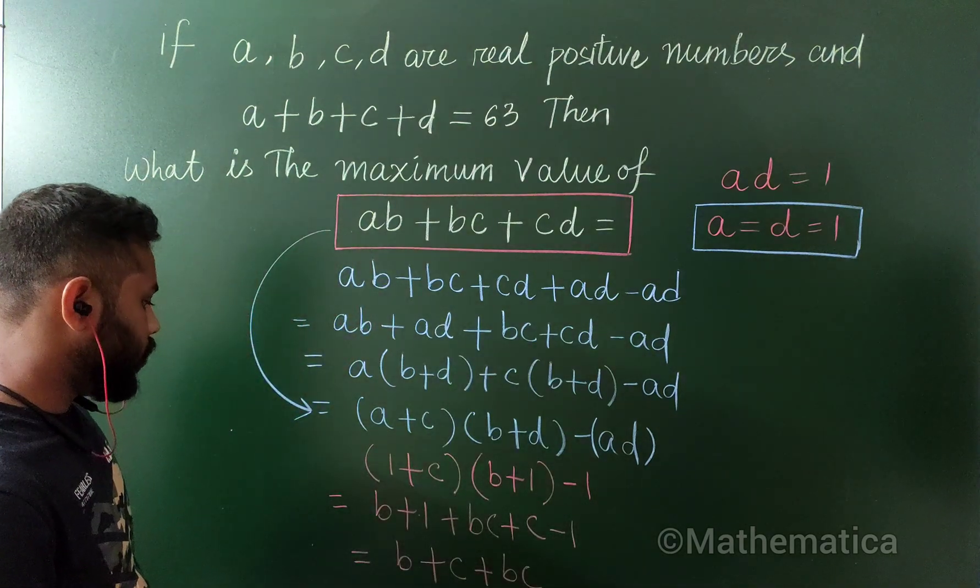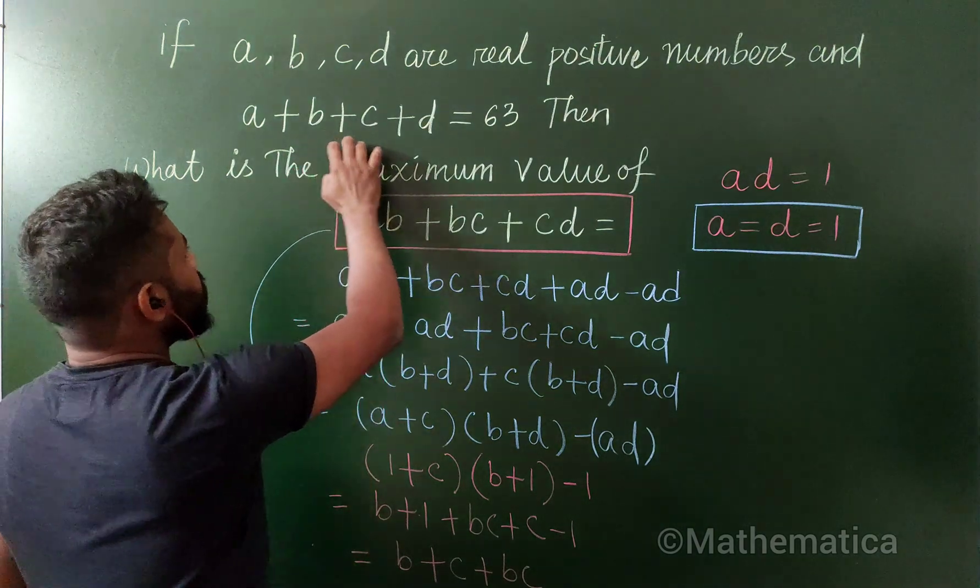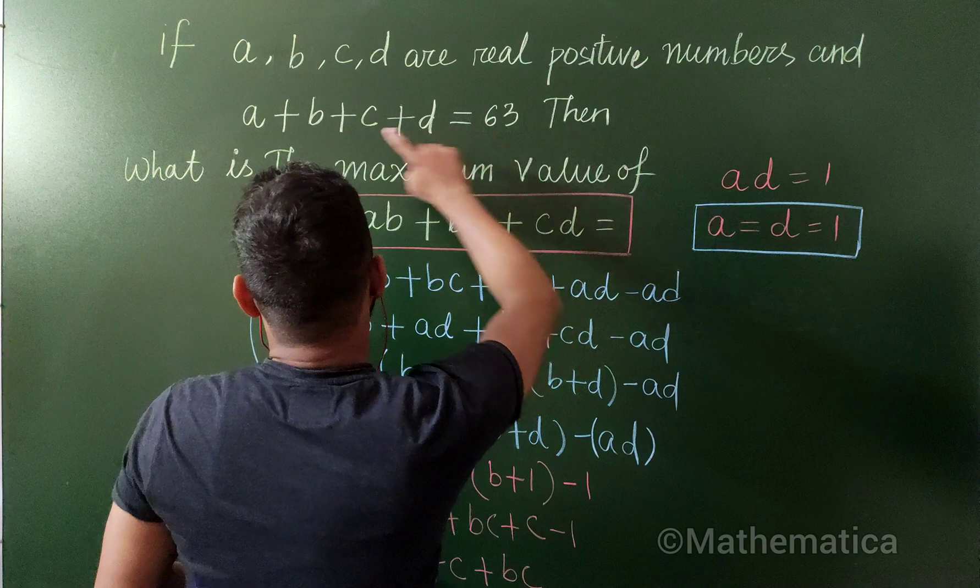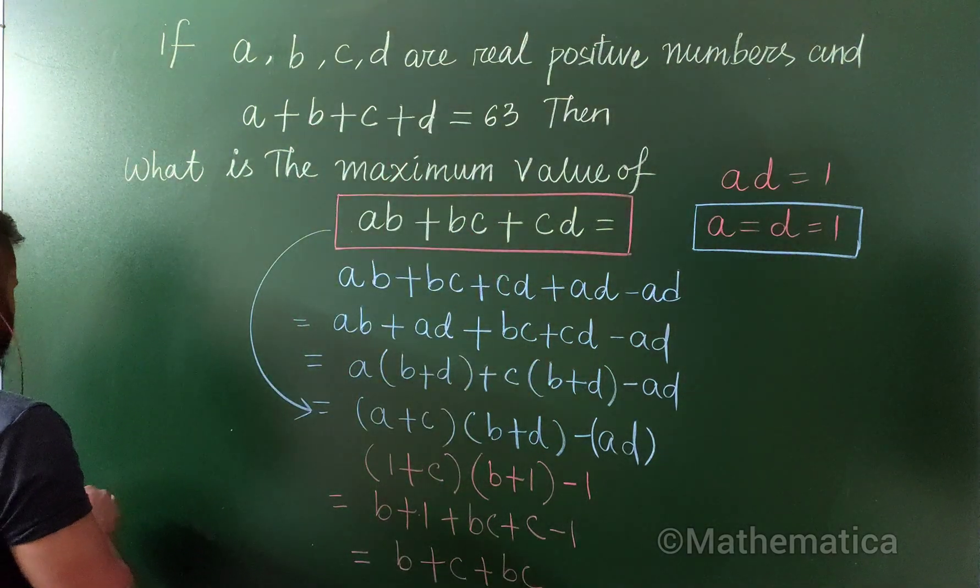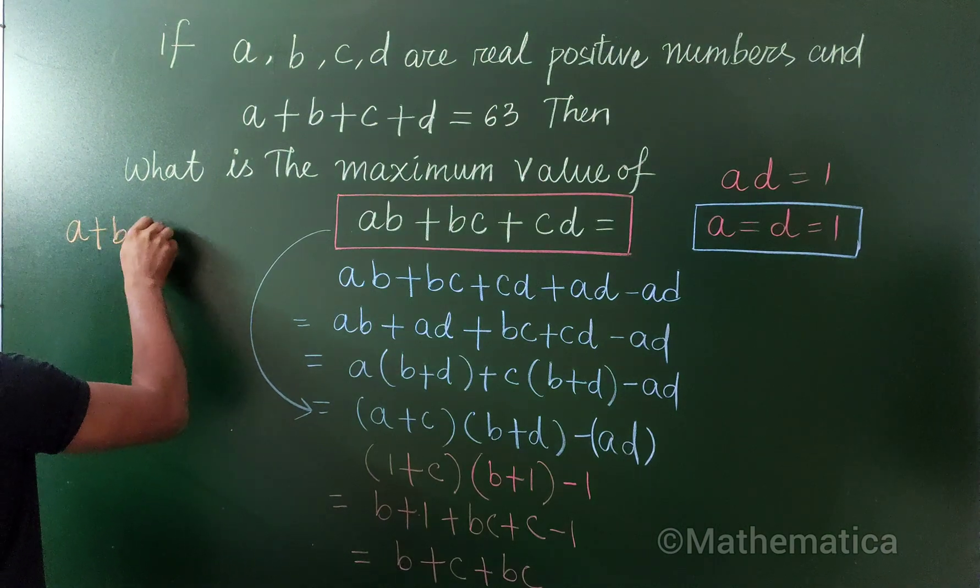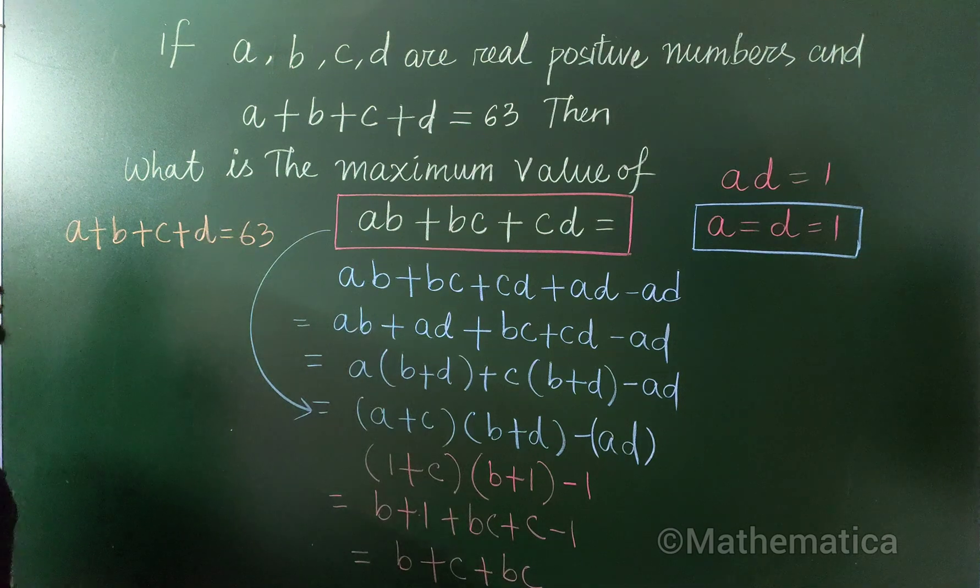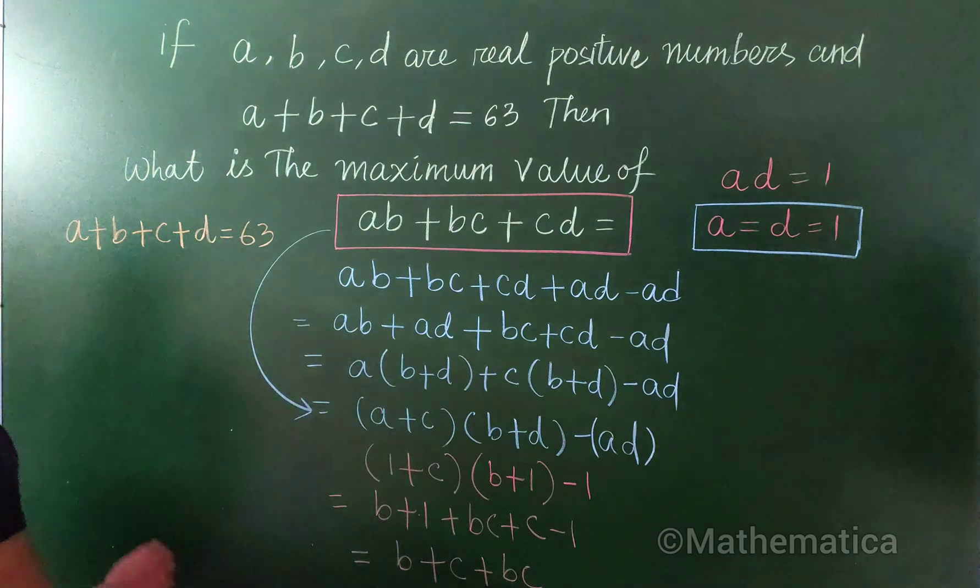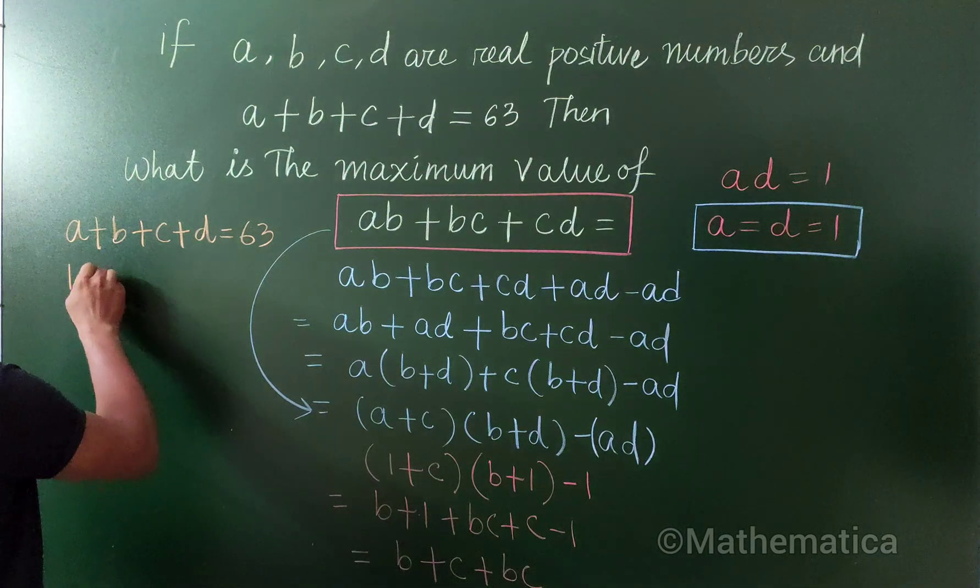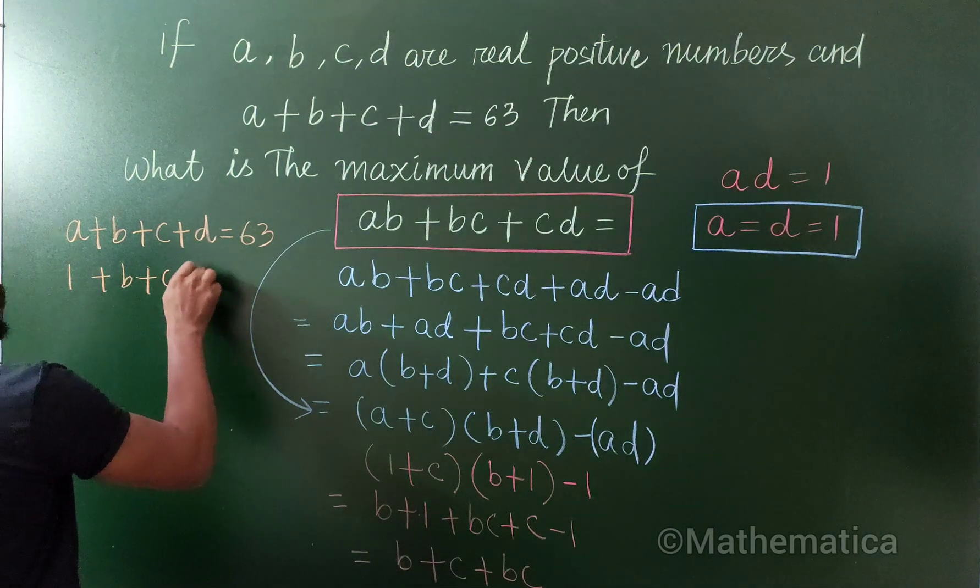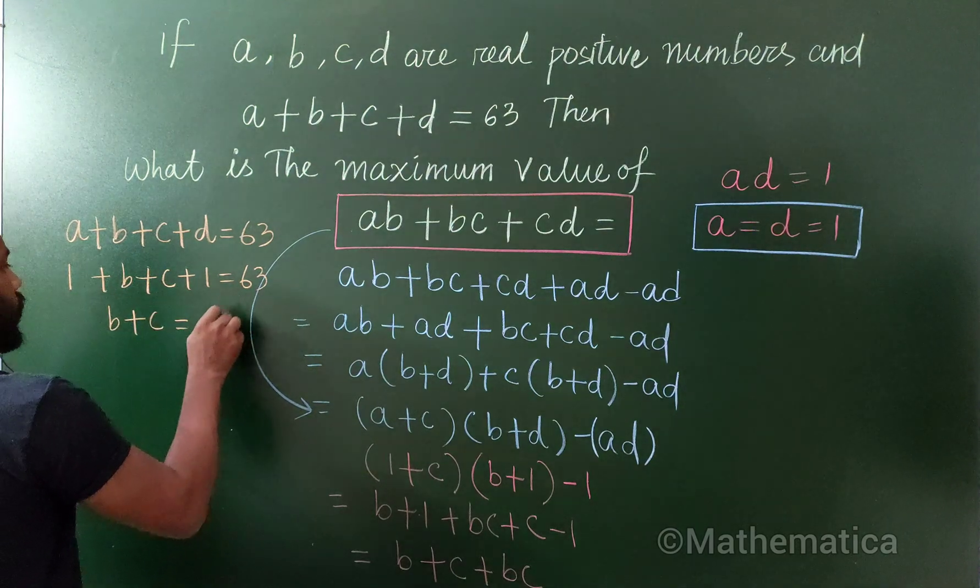And here you can see that from this equation, a and d are equal here. So a plus b plus c plus d is 63, and we got both a and d are equal. So this one equals this one, is also equal to 63. Now b plus c is 61.